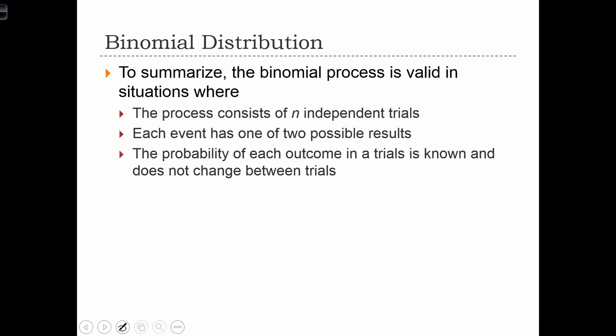Just to summarize now what we've learned about the binomial distribution, especially in determining what kind of processes we can use it in, we know that we can use the binomial distribution when the process consists of n independent trials. So n independent coin tosses, where the value of one result of one trial is independent from the value of another trial.